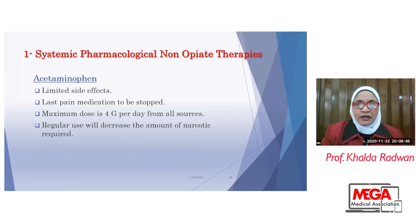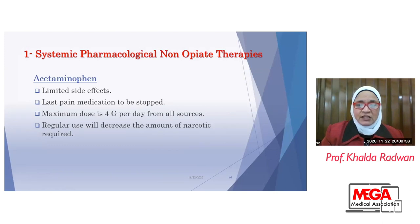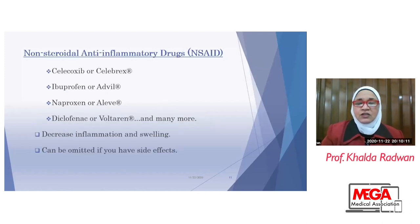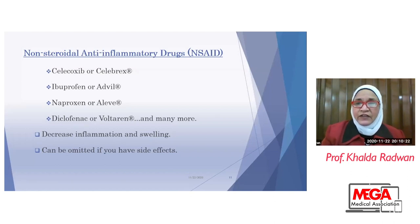Systemic pharmacological drugs used IV or orally include acetaminophen, which has limited side effects. Its maximum dose is four grams per day from all sources. It is regularly used to decrease narcotic requirements. Non-steroidal anti-inflammatory drugs are another type of pharmacological drug used. They have anti-inflammatory effects, but if they have side effects they may produce renal issues, bleeding tendency, or gastric upsets.